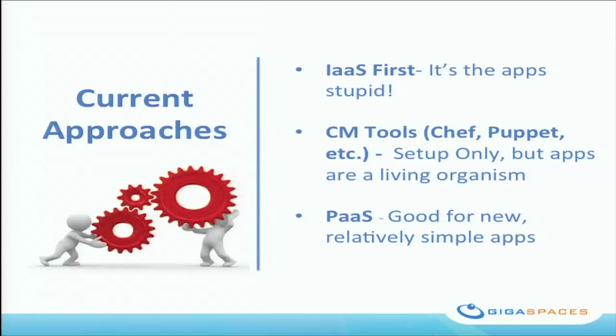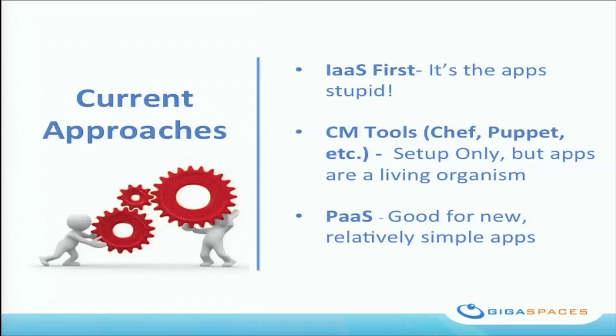The second approach uses configuration management tools like Chef and Puppet, which is a good approach but still relatively complex — it requires a lot of scripting and work to get an application fully automated in the cloud. They're good building blocks, but not as simple as we want. The third approach is PaaS, which means you develop to the cloud and forget about legacy. That's a good approach for greenfield applications, but it doesn't cater to those 7,000 existing applications.